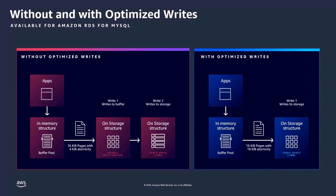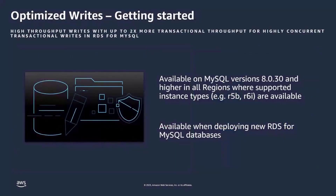However, on a system with Optimized Writes enabled, when a write comes through, it still goes to the in-memory buffer pool, but instead of writing to the Double Write Buffer, it skips that step and safely writes directly to your table space, which ultimately results in an improvement in transaction throughput by up to 2x. Using Optimized Writes, you are able to optimize provisioned storage by writing more transactions per second for the same level of provisioned IOPS. Optimized Writes is available for customers deploying new RDS for MySQL databases using any supported instance type and MySQL version 8.0.30 or higher, in all regions where the supported instance types are available.